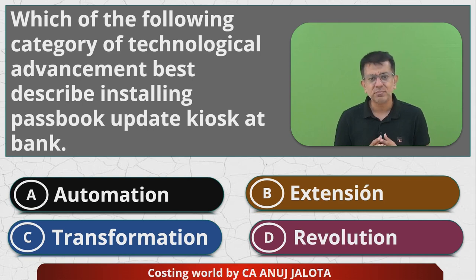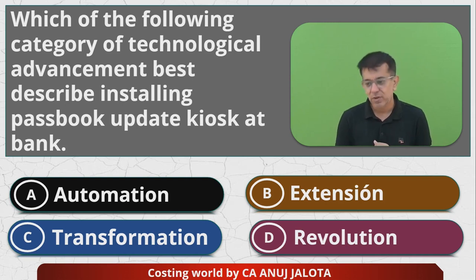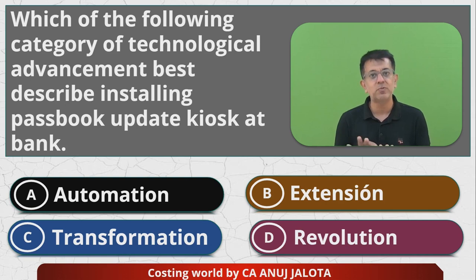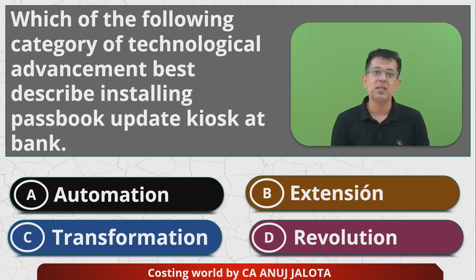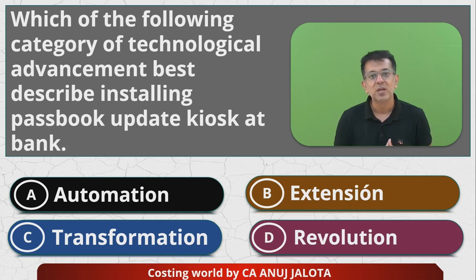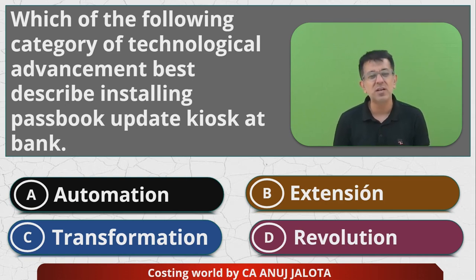These days, passbooks are something we don't even have. But back then, you'd get automatic machines where you put in the passbook and automatically it prints whatever transactions have happened — you put in the passbook, the printing happens automatically, and you get exactly what transactions have occurred. So earlier it was manual, now it is automated — that is nothing but automation.